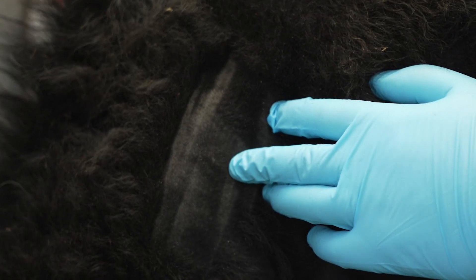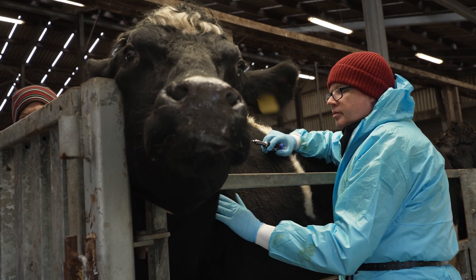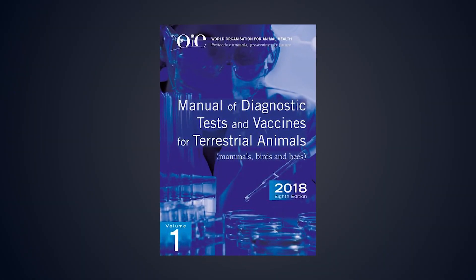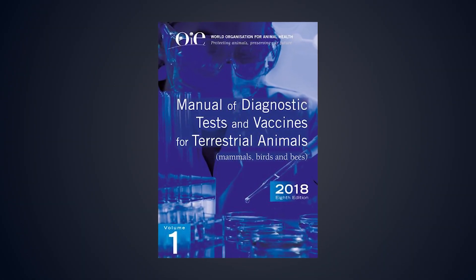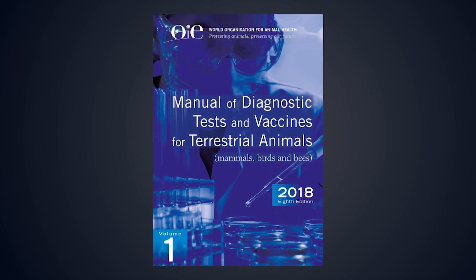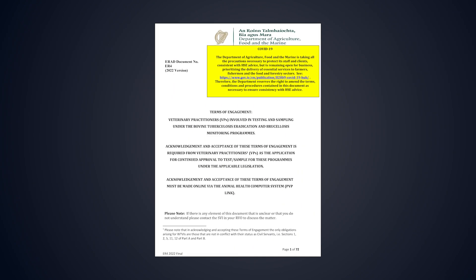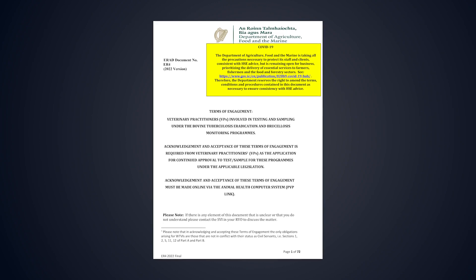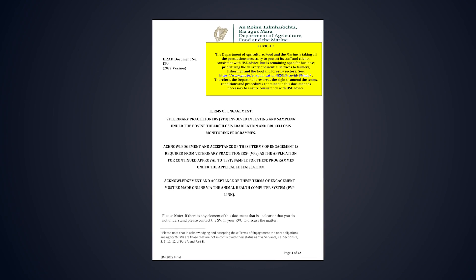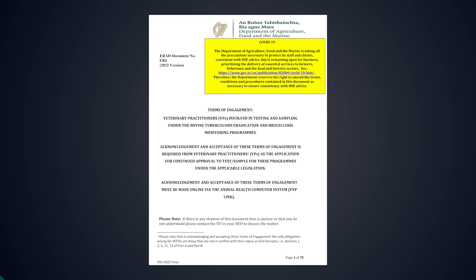The test is demonstrated in accordance with the OIE Manual of Diagnostic Tests and Vaccines for Terrestrial Animals and the requirements under the Irish bovine TB eradication program. Those requirements are set out in the ER4 Terms and Conditions document, which each veterinary practitioner approved to test in Ireland must comply with. This document is subject to change periodically.